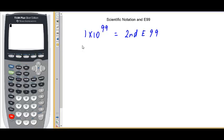If I need to enter a very large negative number, I can type in the opposite of 1 times 10 to the 99th power. This would be negative 2nd E99.